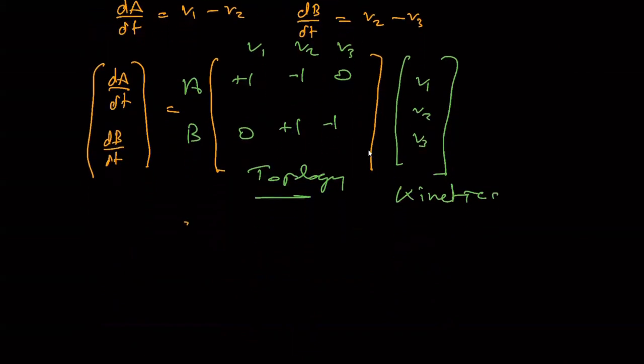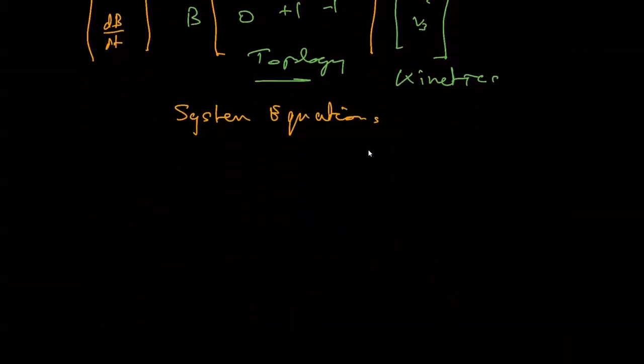And I've sometimes called this the system equation for systems biology, the system equation. And I can write this in more compact form, so if I go dx by dt, so that now is a vector, I put a bar on it to indicate there's a vector. I have a matrix here, which I'm going to call N, I'll come back to that in a minute, and I'll have a rate vector V.